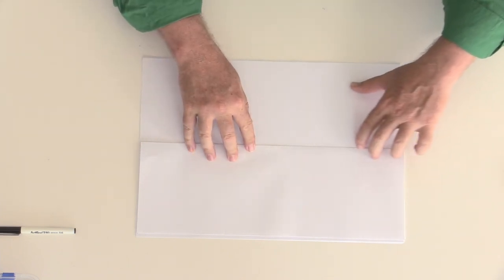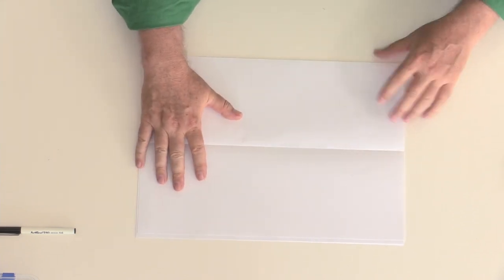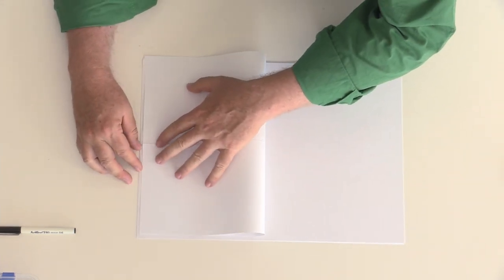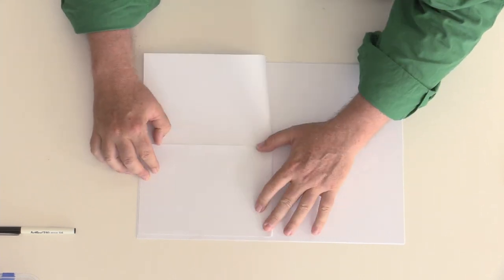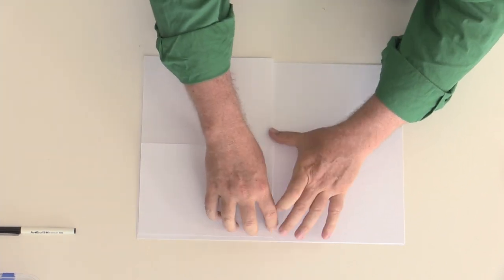I'm just using my nail to get a nice crisp fold there. Open it back up and then fold this way, same thing lining up carefully along our cut edges so that we know that we've got a nice square.